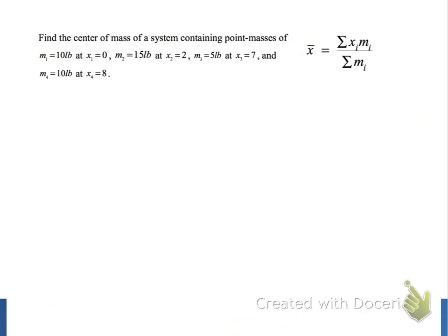Our first mass, m1, weighs 10 pounds and is located at x1 equals 0. All of the weights of the point masses are multiples of 5 pounds, so we'll use two boxes to represent 10 pounds.